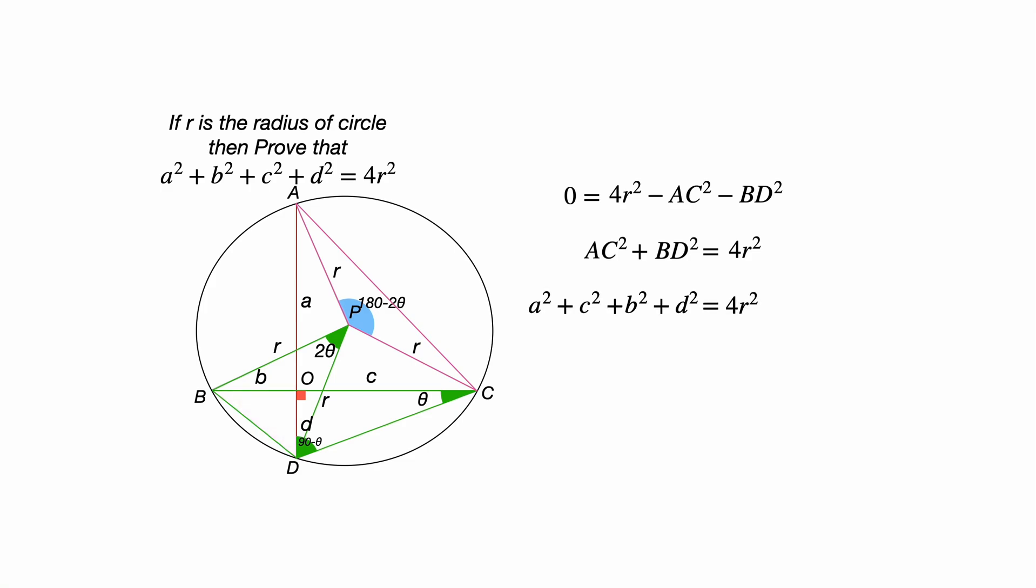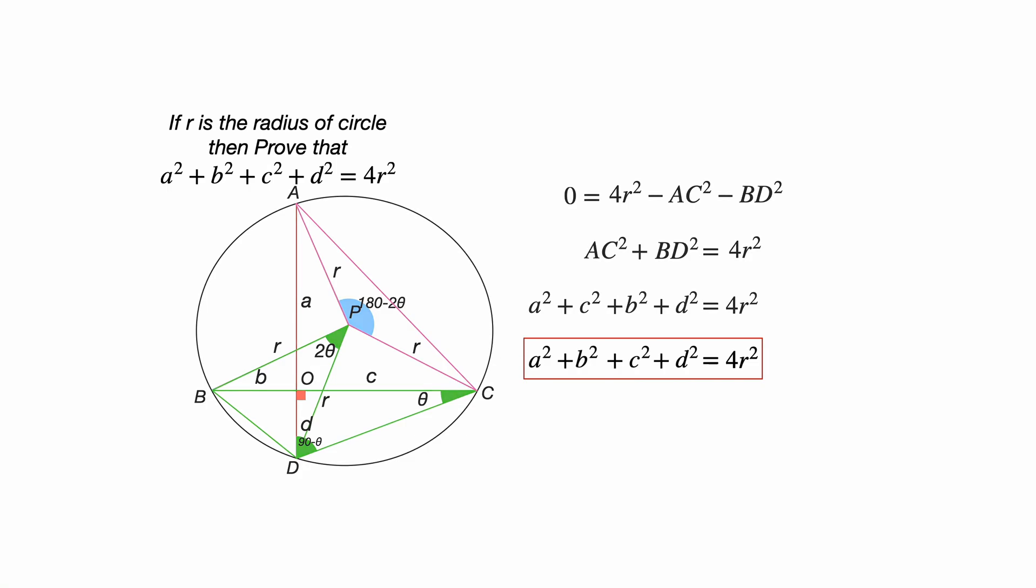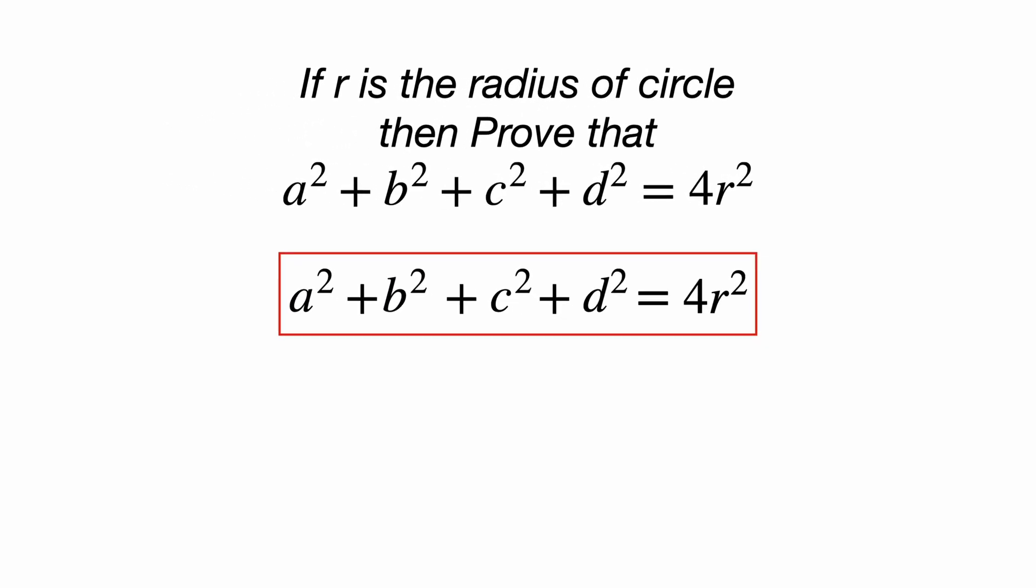So, if we rearrange the terms, we will be getting a² + b² + c² + d² = 4r². This was the required proof. So, if the radius of the circle is r, then we are getting a² + b² + c² + d² = 4r². I hope most of the people have already solved this question. Thanks for watching the solution.